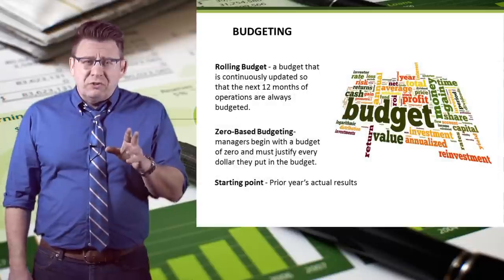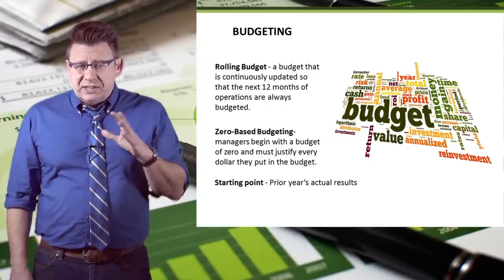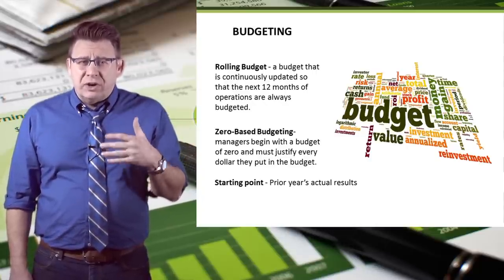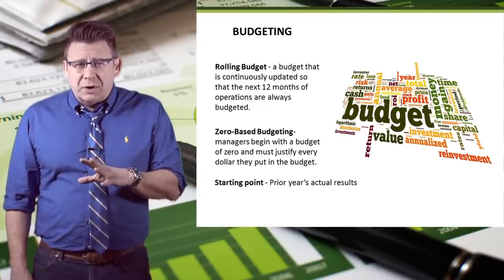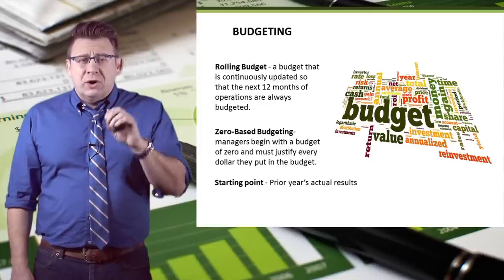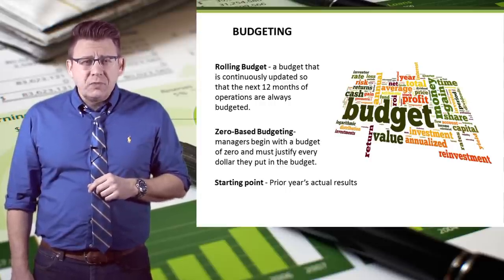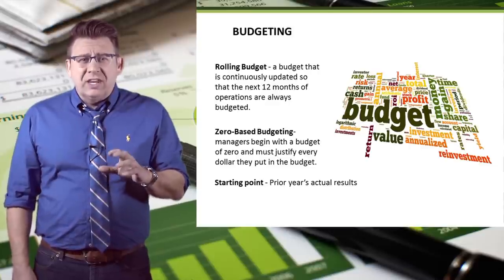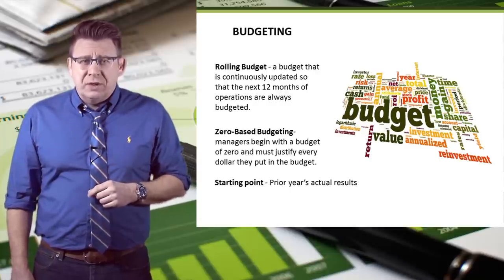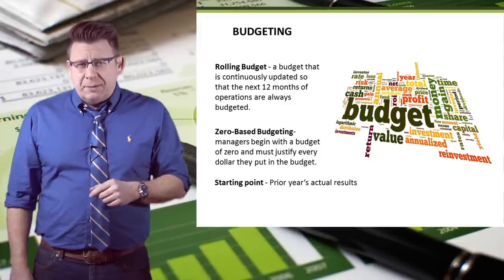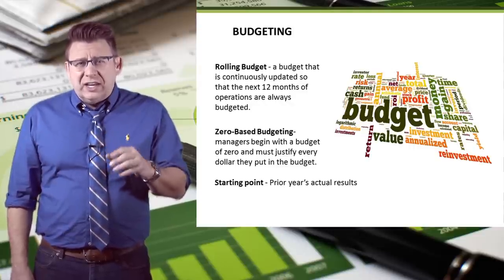There are a few other budgeting terms to be familiar with. A rolling budget is continuously updated so the next 12 months of operations are always budgeted — for example, a January-to-December budget becomes a February-to-January budget once January's actual results are known. Zero-based budgeting begins with a budget of zero and managers must justify every dollar included. This approach is very time consuming and labor intensive, so it is usually only used when expenses start getting out of hand.